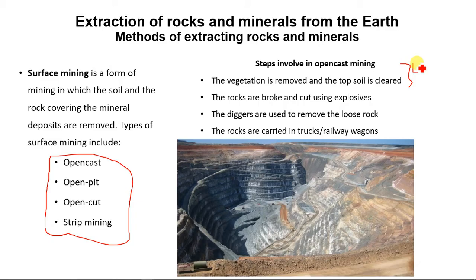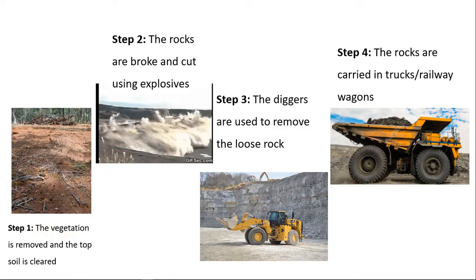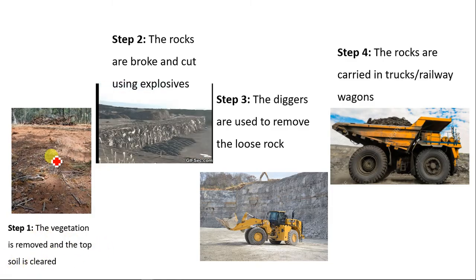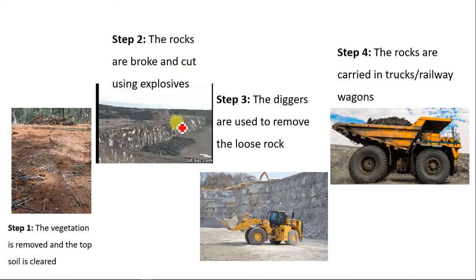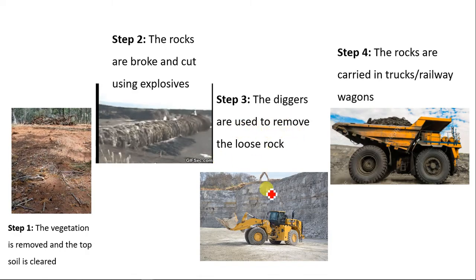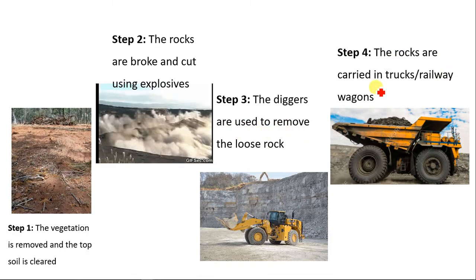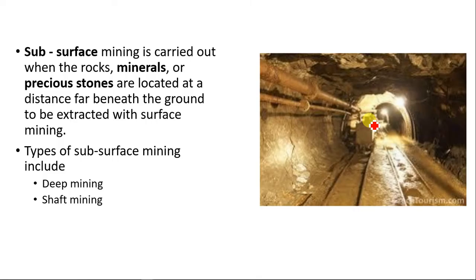Next, the rocks are broken and cut using explosives. Then diggers are used to remove the loose materials and rocks. The rocks are then carried in trucks and railway wagons to where they will be processed. So the steps are: one, vegetation and topsoil are cleared; two, rocks are broken using explosives; three, diggers remove the loose materials; four, rocks are carried by trucks or railway wagons for processing.